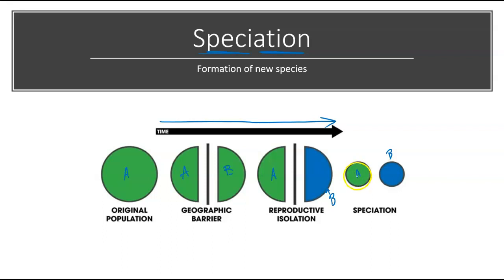Species A would possibly resemble the original population because they exploited similar resources — notice the same color in the diagram. However, because population B couldn't exploit the same resources and got cut off reproductively, they are going to produce a new species. If enough time passes and these two populations evolve enough away from each other — diverge from the original phenotype or genotype — they will no longer have the ability to reproduce with each other and therefore become distinct new species. They will look different, behave different, and may not resemble each other at all.